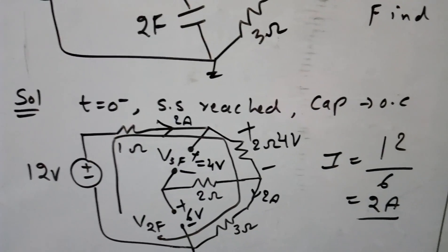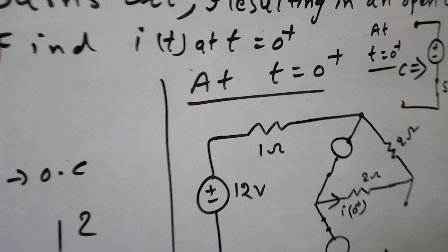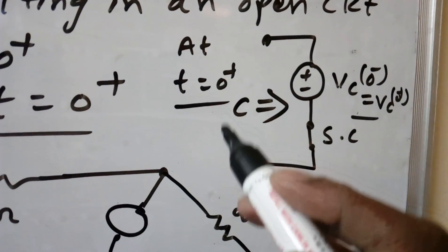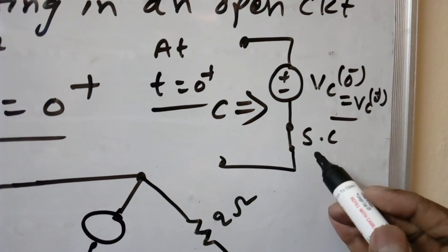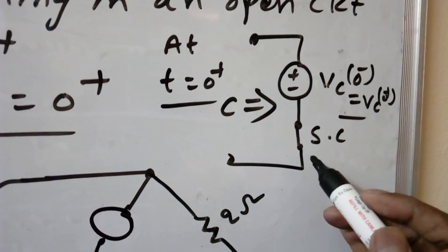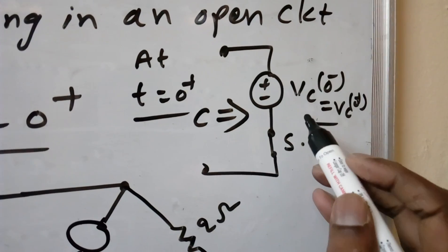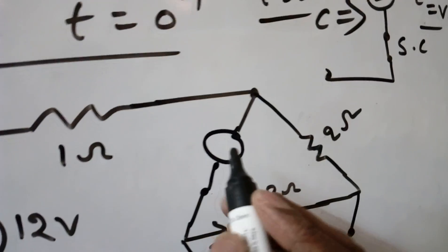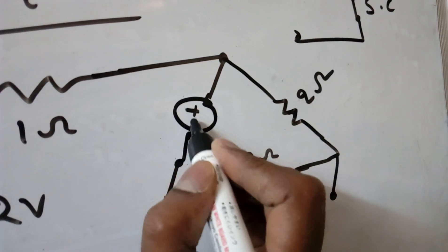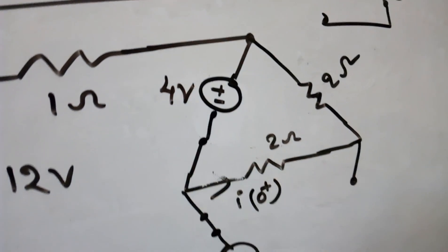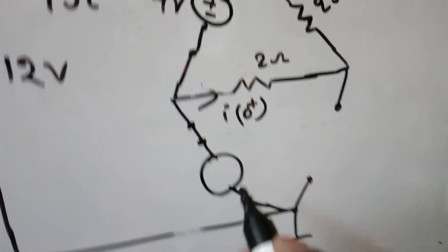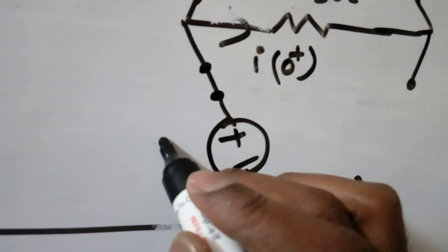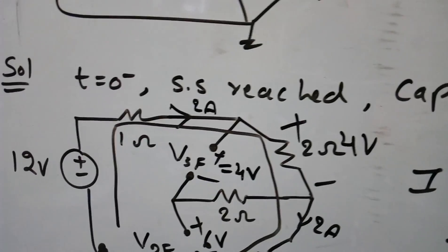Next, but we don't require T equal to 0 minus, we require T equal to 0 plus. Now at T equal to 0 plus, how the circuit will become? I told you at T equal to 0 plus, capacitor will be short circuit because it should oppose the sudden changes, but it will have the previous value. That is V3F(0-) is equal to V3F(0+). That means we got already this is plus minus 4 volts, and there is a short circuit. Similarly short circuit again will have some voltage, which is given as or we found as 6 volts, like this.